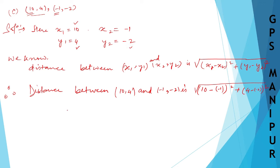Which will be equal to root over: 10 minus times minus is plus 1 whole square, plus 4 minus times minus is plus, so 4 plus 2 whole square. So 10 plus 1 is 11 square, plus 6 square. 11 square is 11 times 11 equals 121, plus 36. Root over 121 plus 36, which will be 157. Root 157.